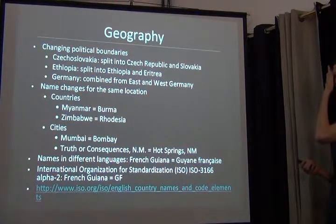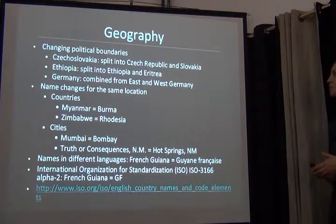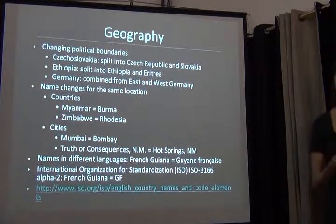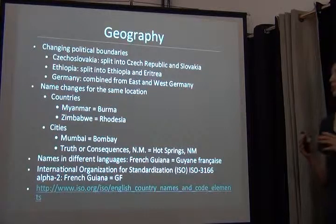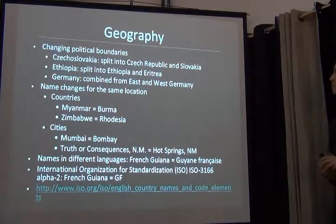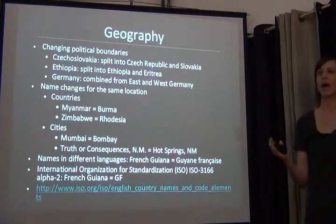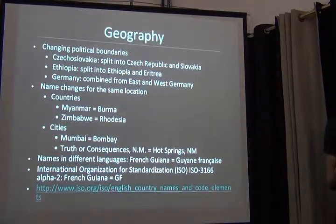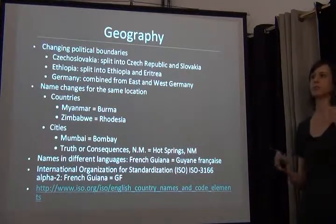More specifically with geography — why do we run into problems? Changing political boundaries are happening all the time. For example, Czechoslovakia has been split into the Czech Republic and Slovakia. This also happened in Ethiopia. Germany got bigger, combining from East Germany and West Germany, so that one is actually a bit easier to standardize. Then there are name changes — depending on where the collector originated from, they may be using out-of-date terms rather than the accepted ones. Myanmar and Burma is a good example, as is Mumbai and Bombay, and even small cities within the U.S. The question is: when you're entering label data and standardizing it, do you enter it as-is, or do you use the current political boundaries?